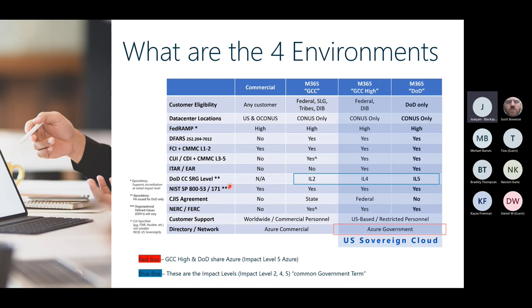All 800-171 controls are met by any environment, but it gets tricky if your contract says you must handle CUI and meet ITAR requirements — where you can't export any information — which requires data sovereignty. GCC High also gives you a 72-hour SLA for cyber response from Microsoft. GCC and commercial don't have that 72-hour SLA. If you have a cyber incident you need to collect logs within 72 hours from your cloud provider, and GCC High promises that; GCC and commercial do not.